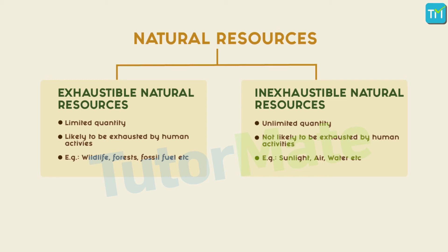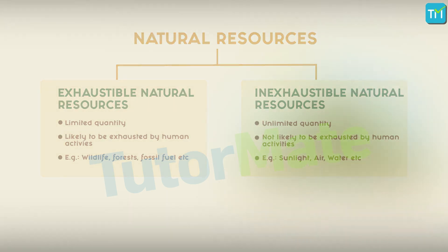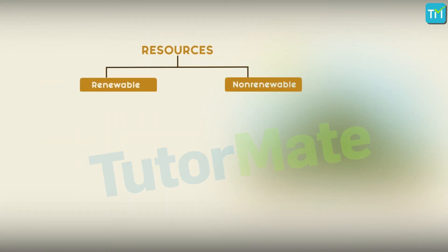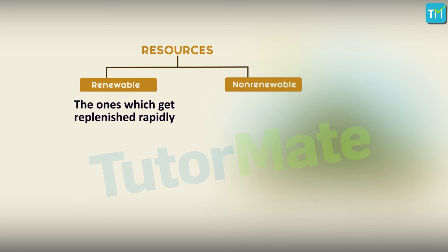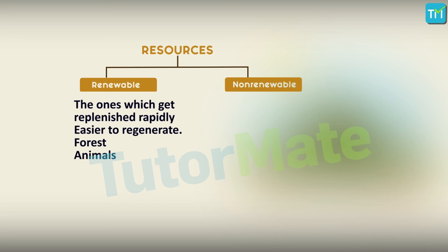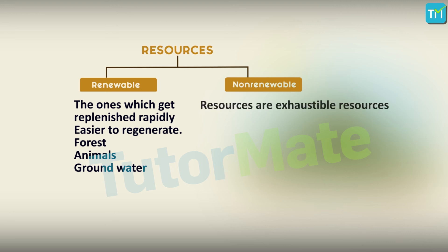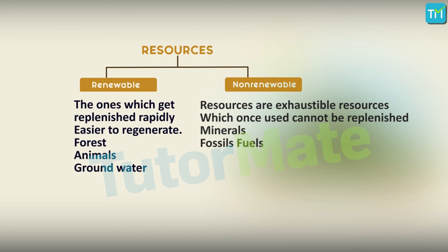Exhaustible natural resources are available only in limited quantities, and these are of two types: renewable resources and non-renewable resources. Renewable resources are the ones which get replenished rapidly — they are easier to regenerate. For example, a forest that gets destroyed can be regenerated by planting new trees, animals can reproduce, and groundwater gets replenished by rain.